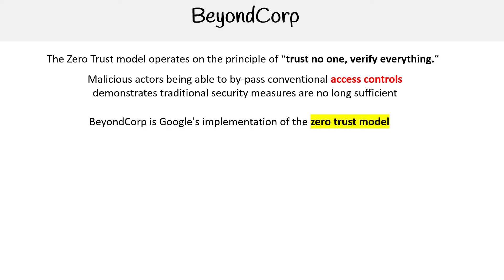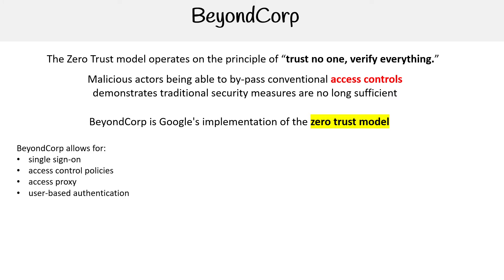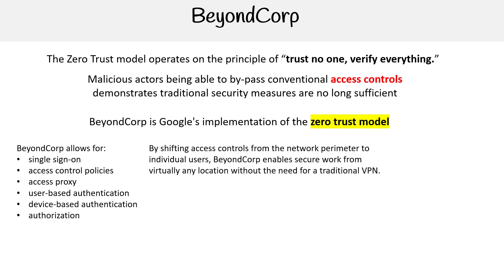BeyondCorp is Google's implementation of the zero trust model. It allows us to do things such as single sign-on, access control policies, access proxies, user-based authentication, device-based authentication, and authorization. By shifting access controls from the network perimeter to individual users, BeyondCorp enables secure work from virtually any location without the need of a traditional VPN.